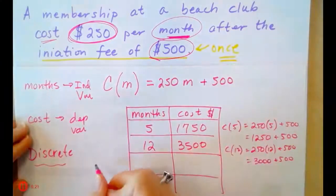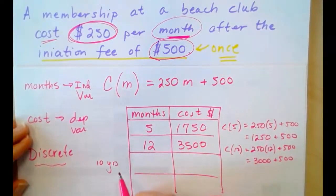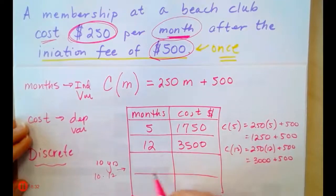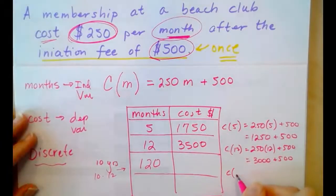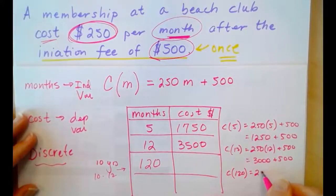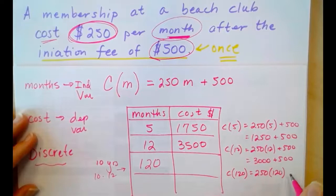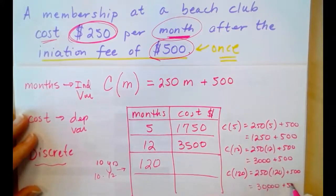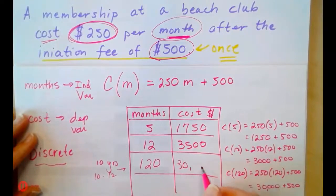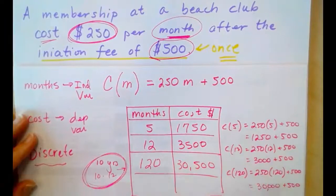Next, 10 years. Now, notice I didn't write 10 years there because this input is in terms of months. So, 10 years is 10 times 12. That's 120 months of beach club dues. So, C(120) is 250 times 120 plus the 500. So, if 250 times 12 is $3,000, then 250 times 120 will have one more zero. That will be $30,000 of dues. So, $30,000 plus 500, $30,500 after 10 years of the beach club membership.